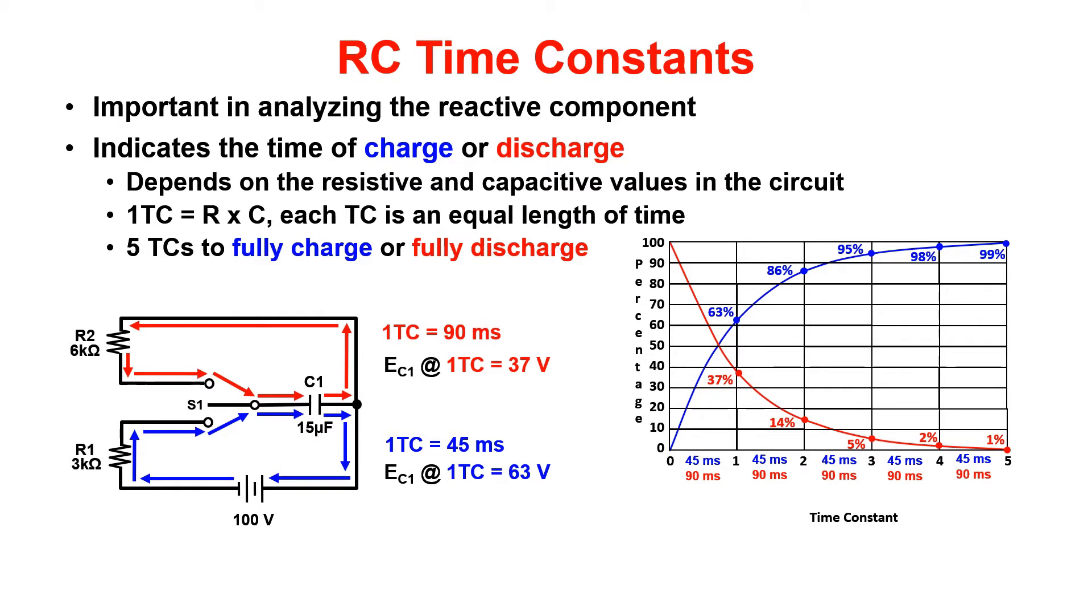Now, if the question asks what is the level of charge at 135 milliseconds, you would first need to find the TC and divide the time given in the problem by your one TC value. This is how it would look.